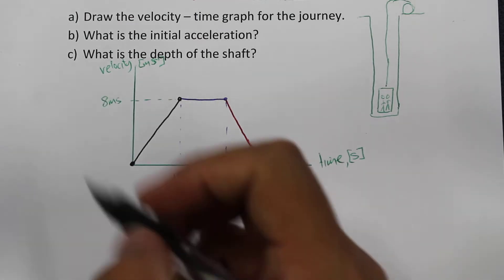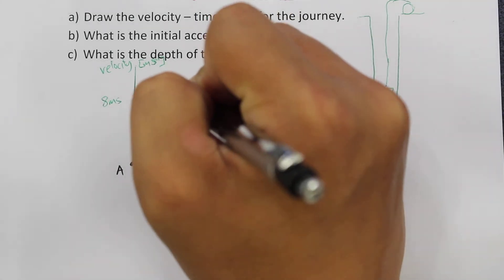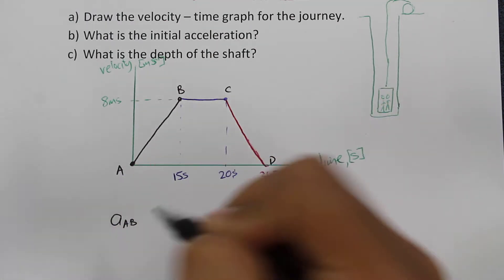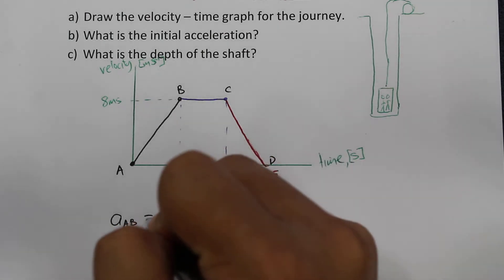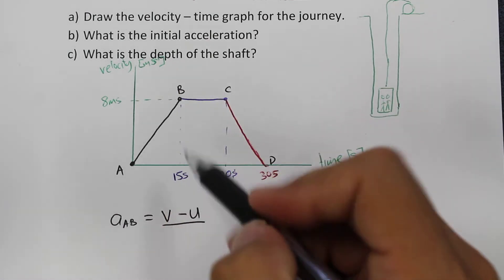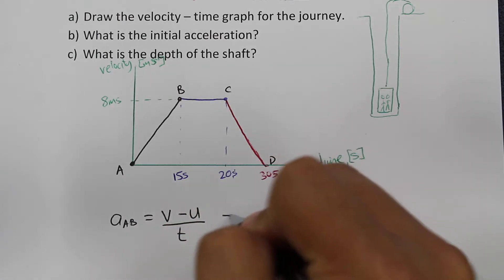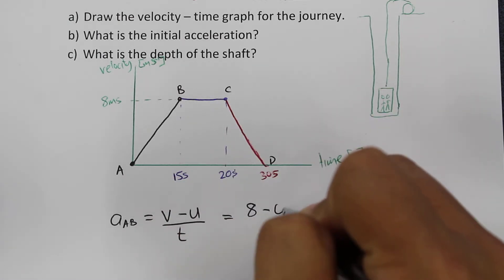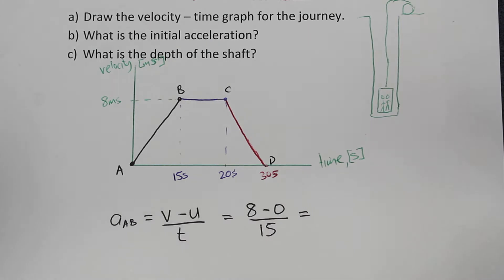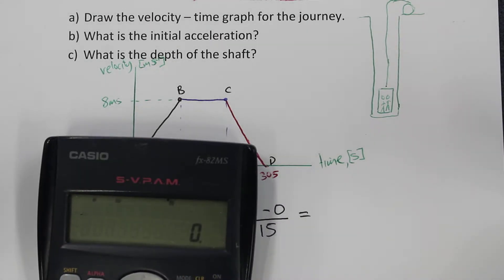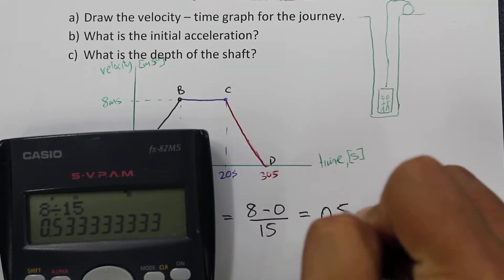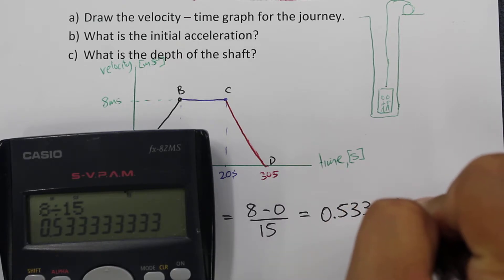For part B, labeling the graph points A, B, C, and D, the acceleration going from point A to point B equals the change in velocity — final velocity minus initial velocity — divided by the time taken. So this equals 8 minus 0 divided by 15 seconds, which gives 8 divided by 15, equal to 0.533 meters per second squared.